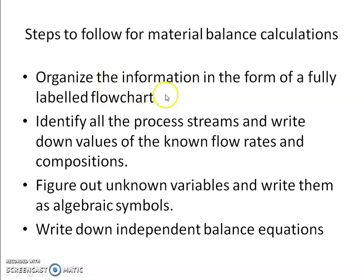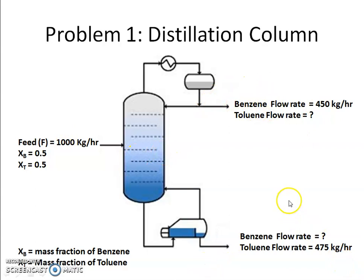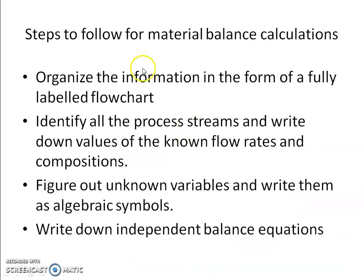To do these calculations, first organize the information in the form of a fully labeled flowchart. I've made a flowchart here — the box represents the distillation column process unit, with the feed going in as the incoming stream and the distillate and bottom as the outgoing streams. Draw this first, then fully label it and identify all the process streams.